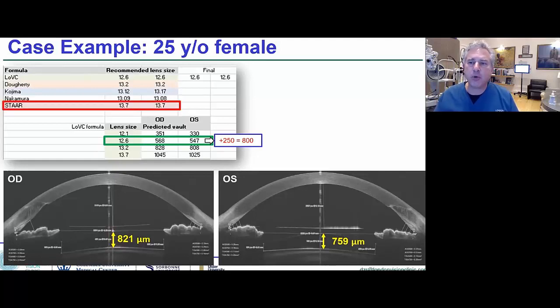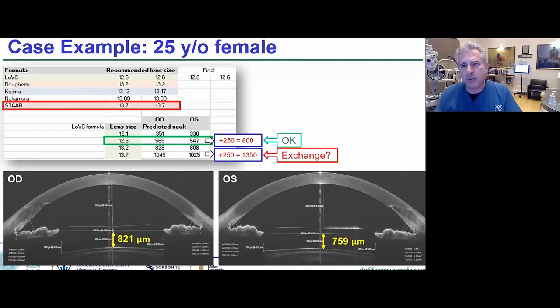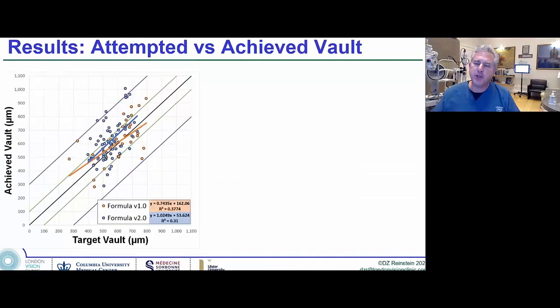That's fine because we put in a 12.6. If we had put in the 13.7 and it had been 250 above 1,000, that might've put us into lens exchange territory. The point here is about eliminating the exchanges. The vault is exceedingly forgiving, I think is the best word we can use.